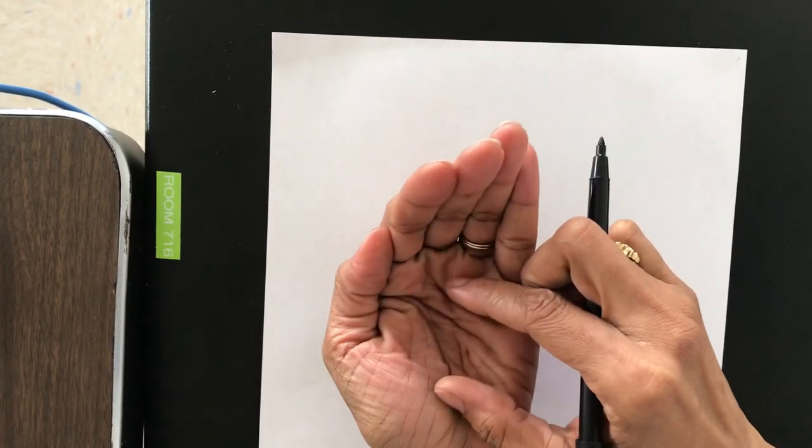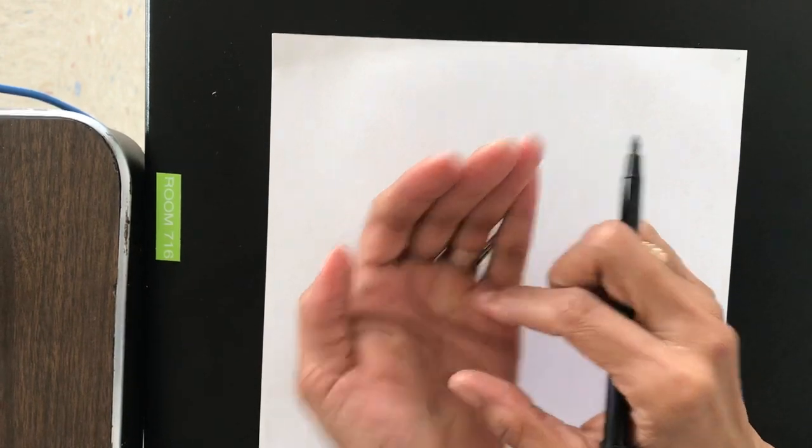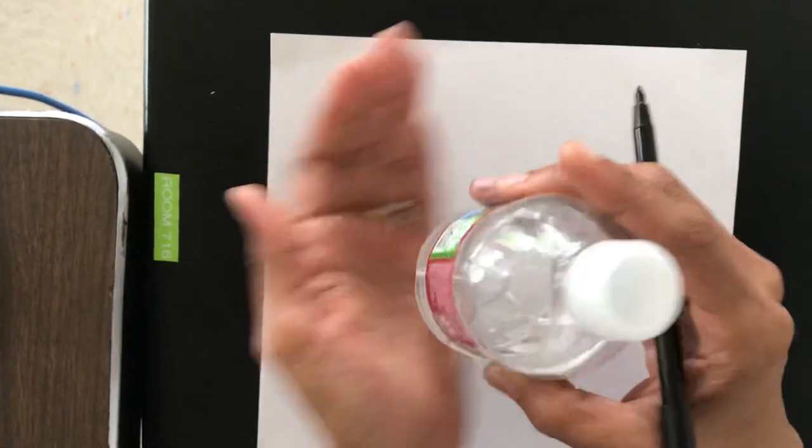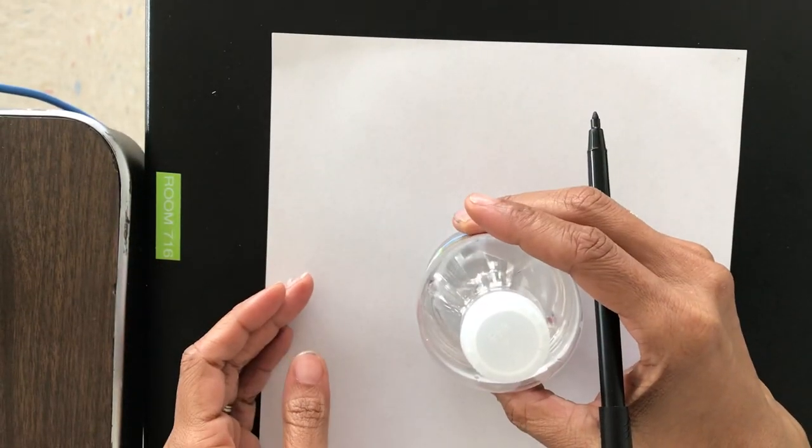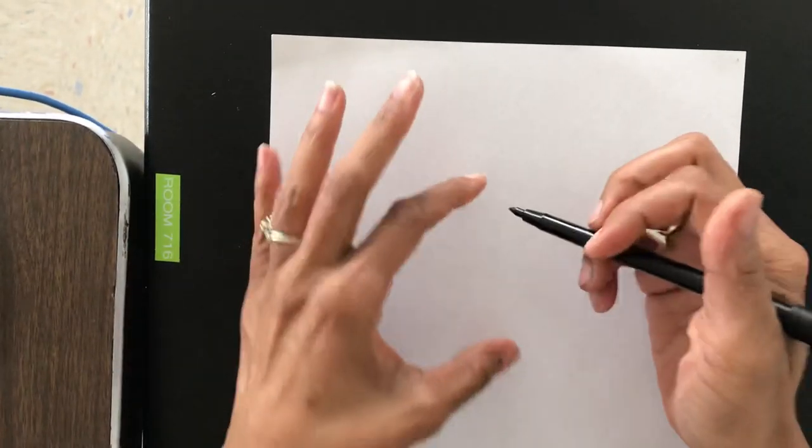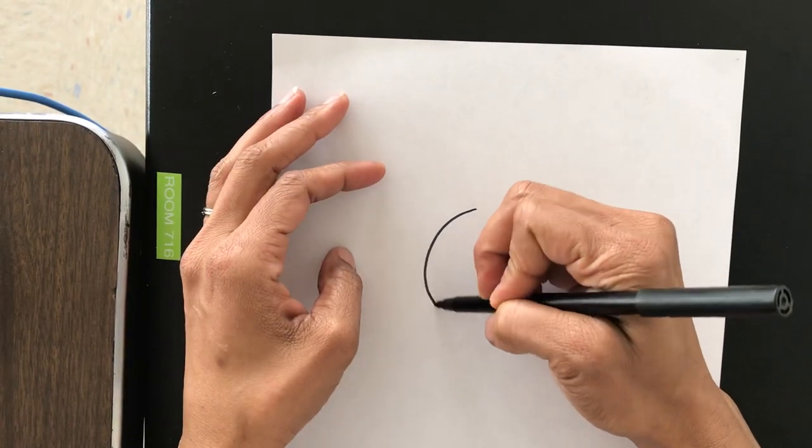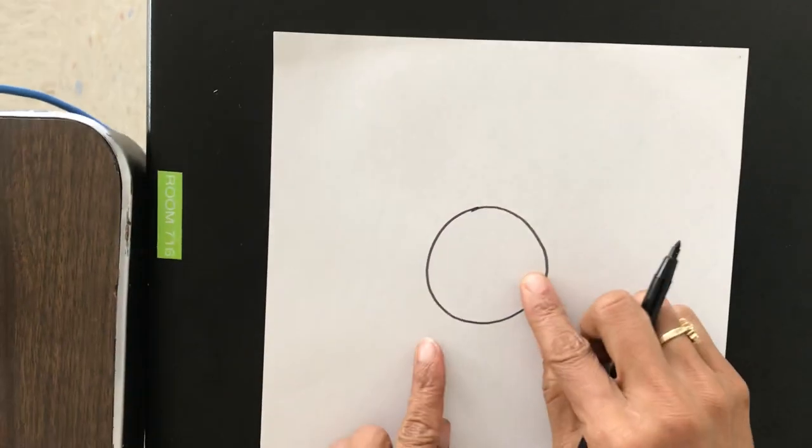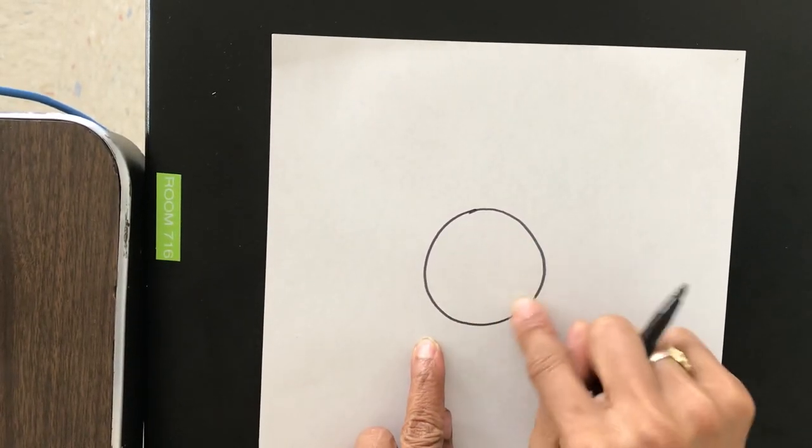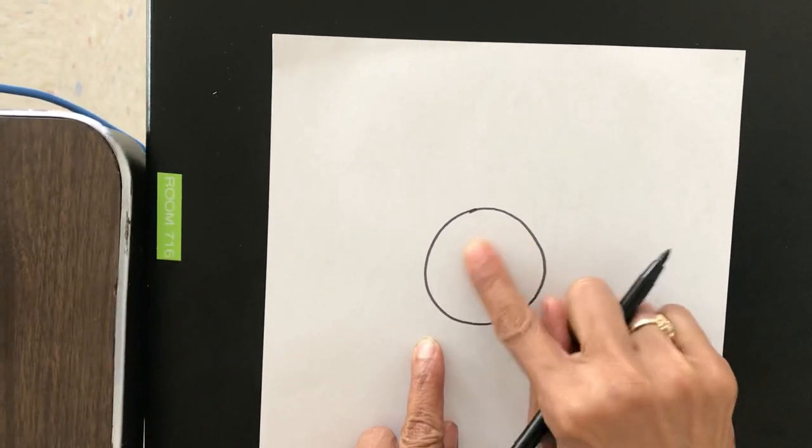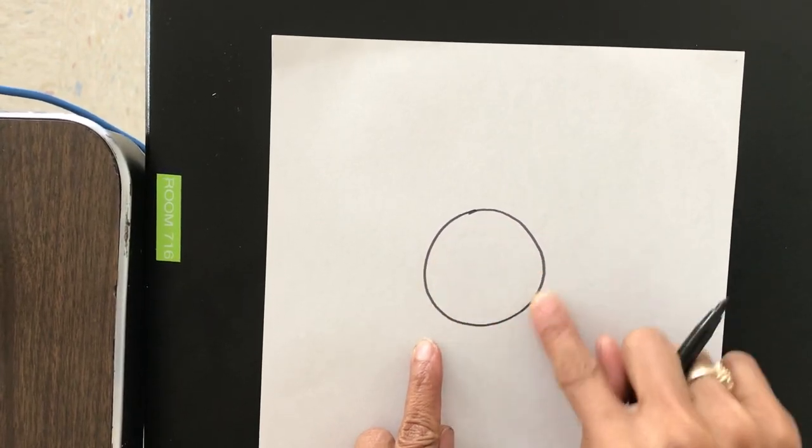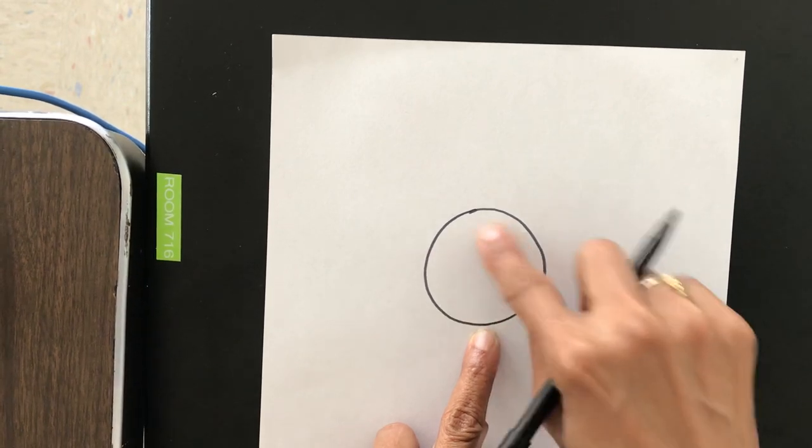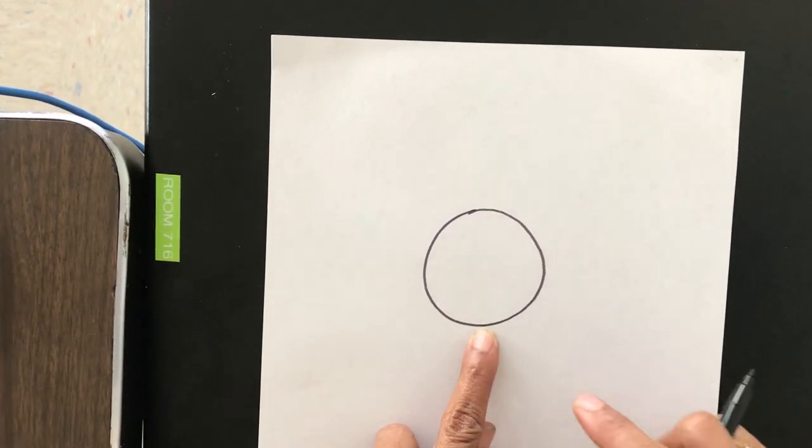Think of it like the bottom of a water bottle. That's about as big as you want it to be. So let's go ahead and do it. There is my circle. Cool. And that is the center part of my flower, my sunflower. And this is where the seeds come from, everybody. The little brown part is where the seeds come from.